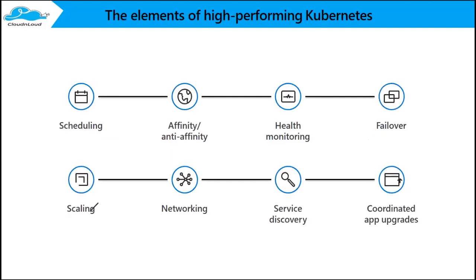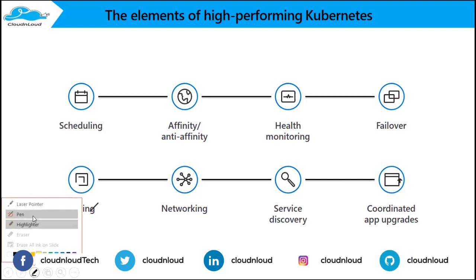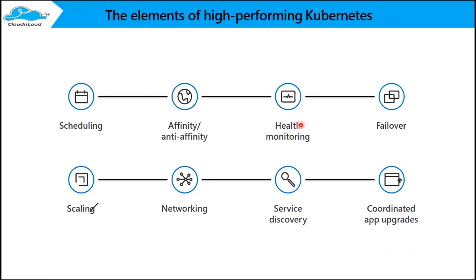Why Kubernetes? Basically, Kubernetes helps with the scheduling part, affinity, health monitoring, and failover — which is very easy. Scaling is very robust, and networking is on the fly and very easy. Service discovery has a lot of plugins, customization is possible, and app upgrades can be done scheduled as well as manual. Complete CI/CD pipeline integration and upgrades are also flexible.